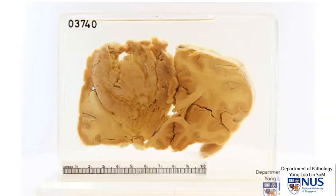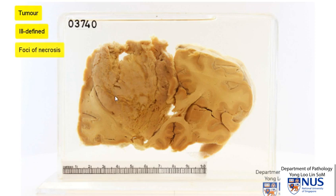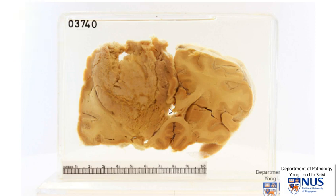So there is a mass lesion and this represents a tumour and it is ill-defined. It has got areas of necrosis and some areas of cavitation, and it also appears to be very close to the lateral ventricle and it's possible that the ventricle has been involved. In this instance, sampling of the cerebrovascular fluid may actually show tumour cells.